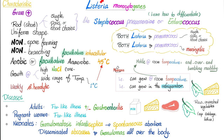Listeria can grow in the refrigerator and at room temperature. At room temperature, Listeria is also motile — it has an end-over-end tumbling motility. They love to ask about this on the exam. You can watch some really good videos about the tumbling motility of Listeria on YouTube — learning is fun, or you can watch your professor's PowerPoint.